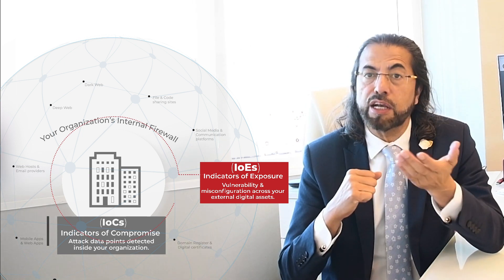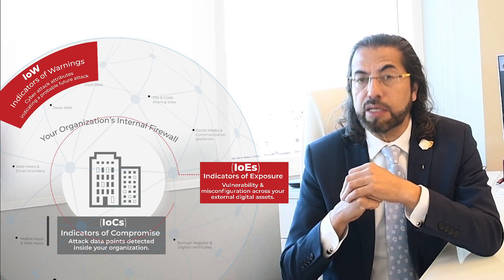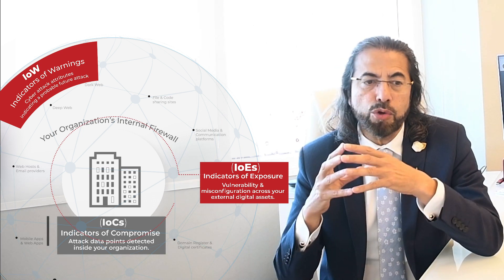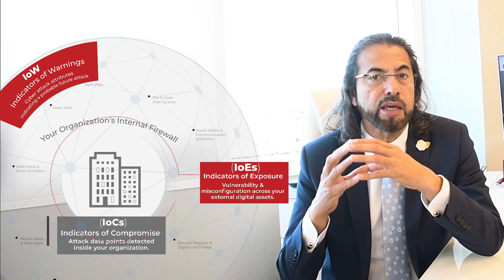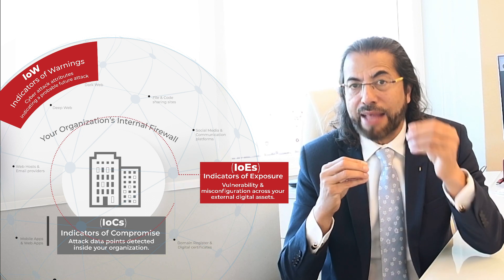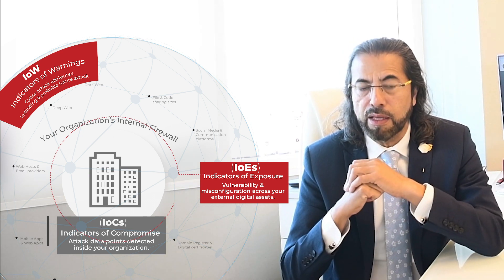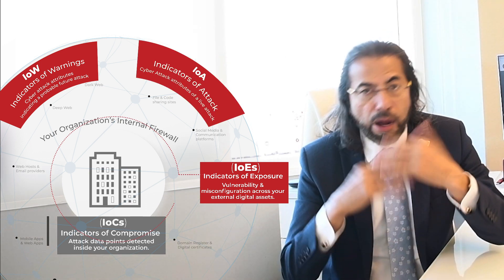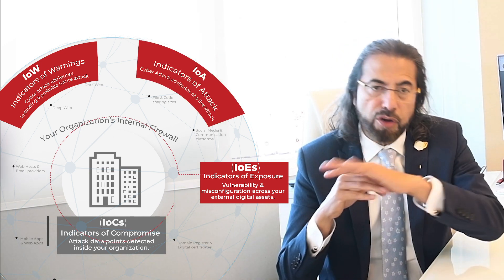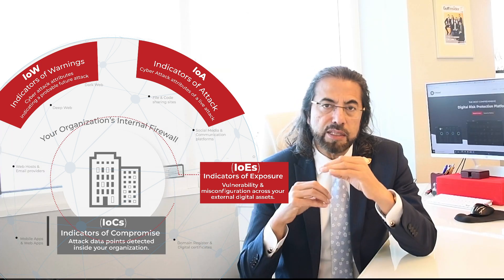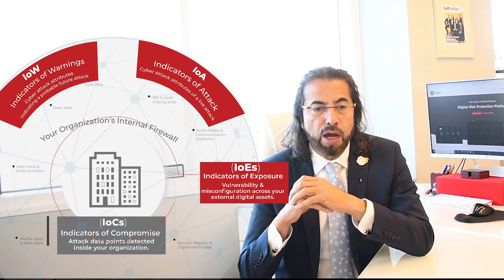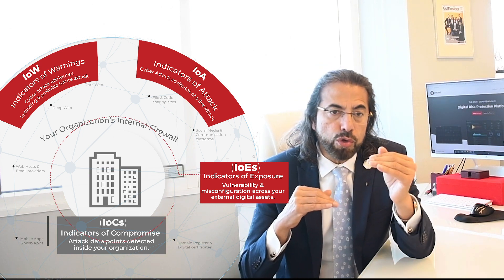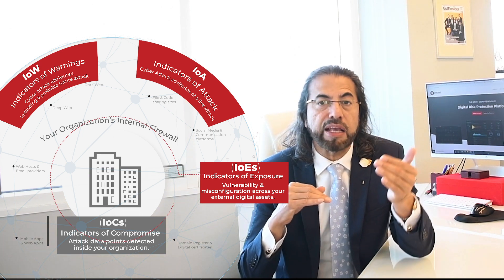Then you have indicators of warning, which is about data attributes across the internet that, if identified, tell you there is a probable attack coming your way. Finally, there are indicators of attack, which are also outside your organization across the internet space. These are the data attributes which constitute an attack, so if you know those during an attack, you can neutralize them then and there.